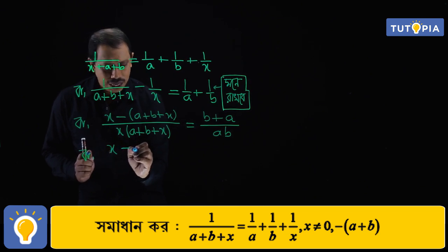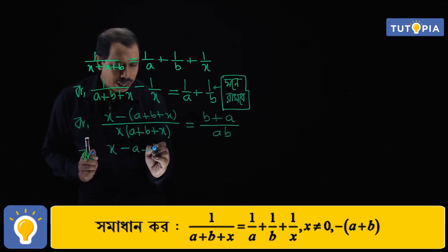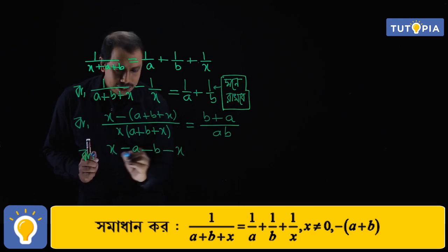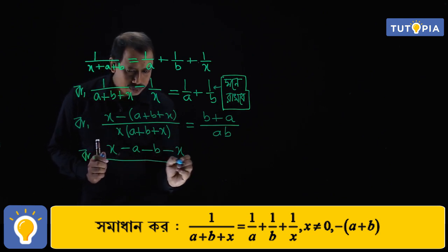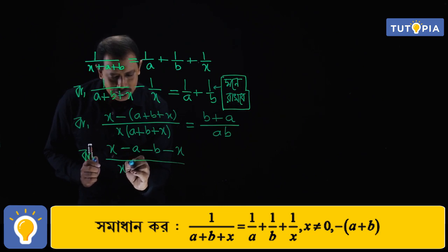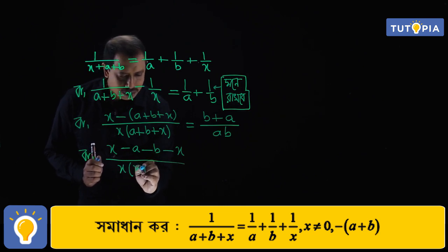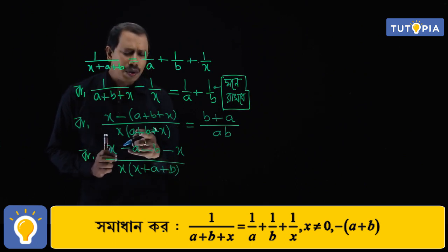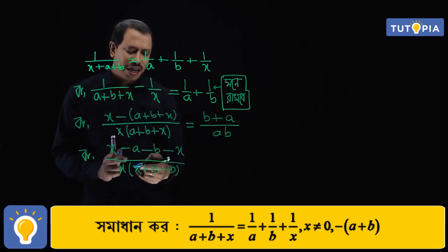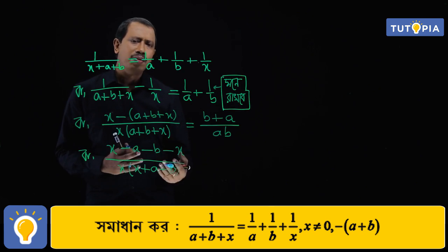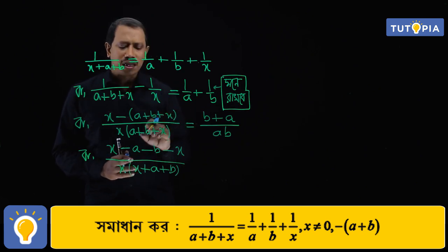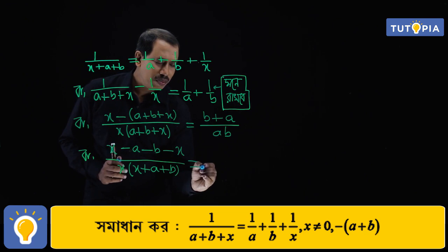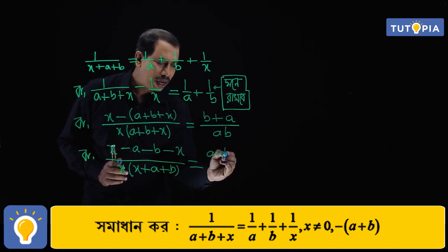This gives us: (x minus a minus b minus x) by x into (x plus a plus b), equals a plus b. Note that (a plus b plus x) and (x plus a plus b) are the same expression — for example, 2 plus 3 equals 3 plus 2.